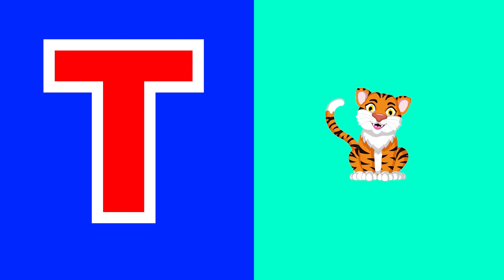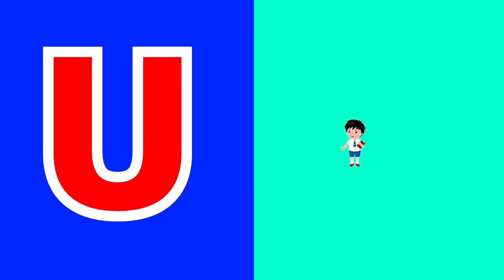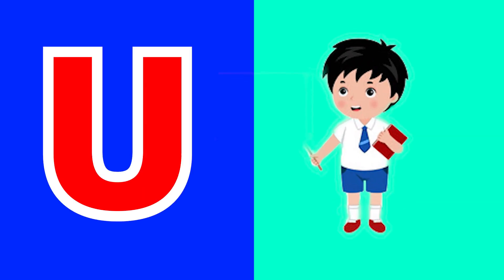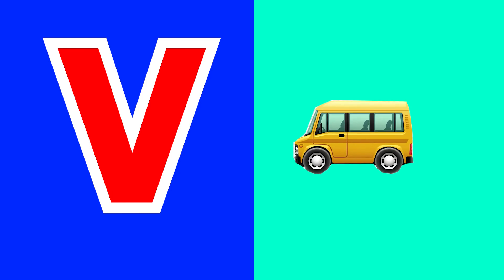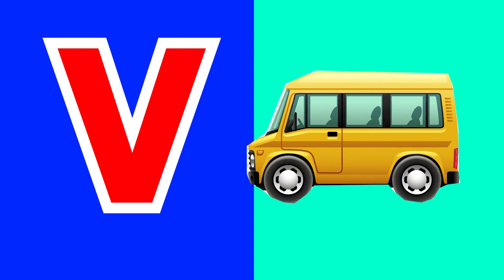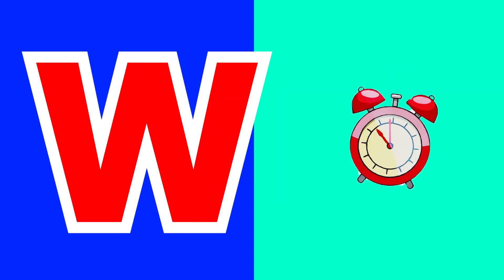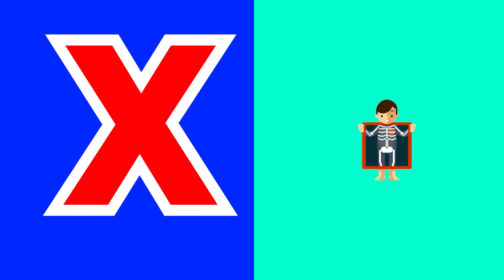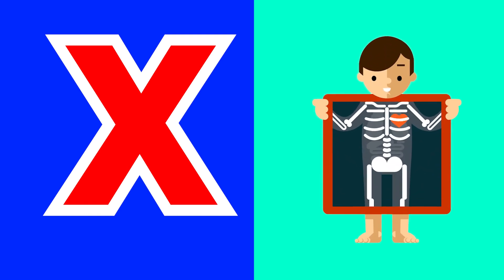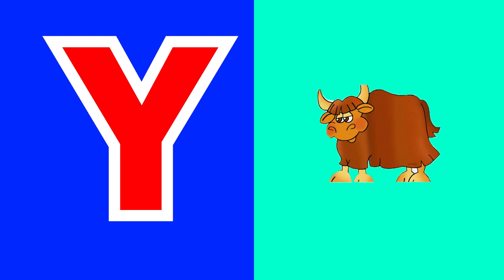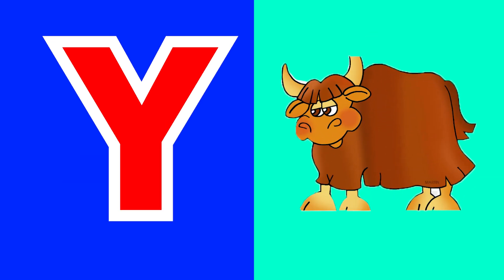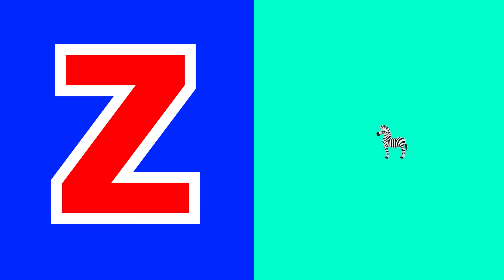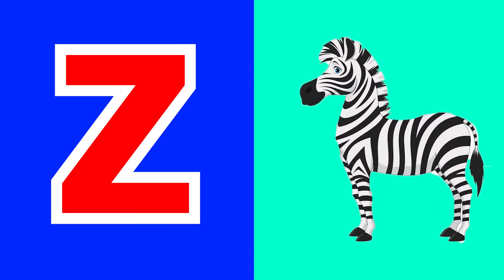D for tiger, U for uniform, B for van, W for watch, X for x-ray, Y for jag, Z for zebra.